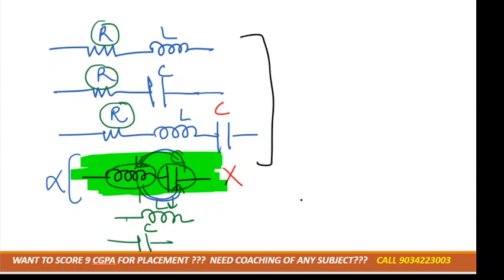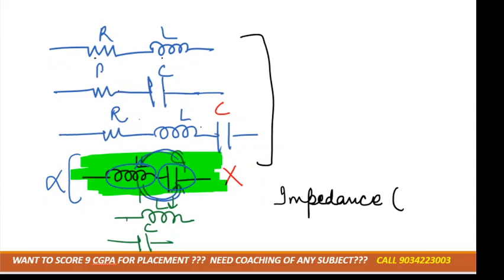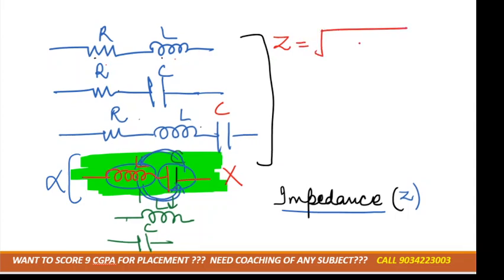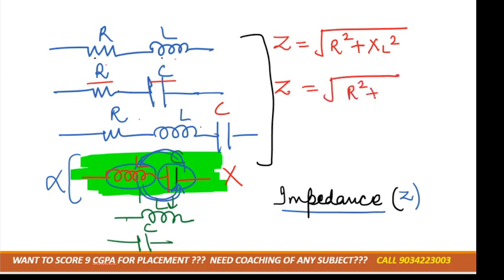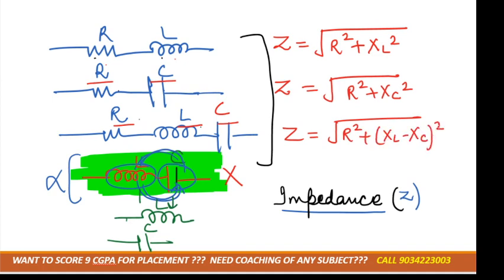If there is a combination of these loads, their resistance is known as impedance. For R-L, R-C, or R-L-C combinations, the combined opposition is called impedance, denoted by Z. The formula for Z: if R and L combination, Z = √(R² + XL²); if R and C combination, Z = √(R² + XC²); if R, L, and C combination, Z = √(R² + (XL − XC)²).